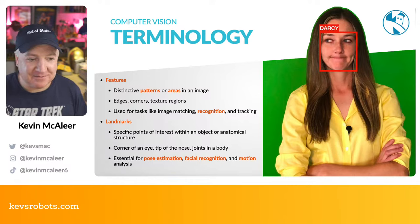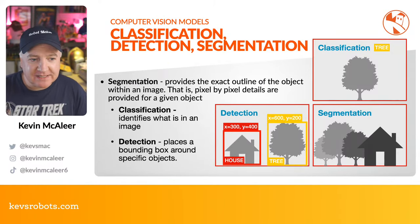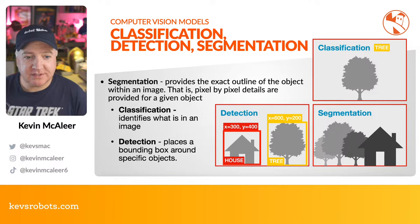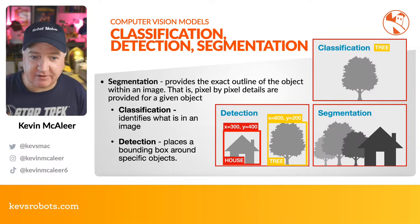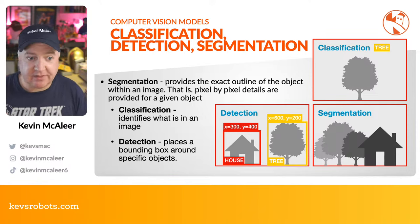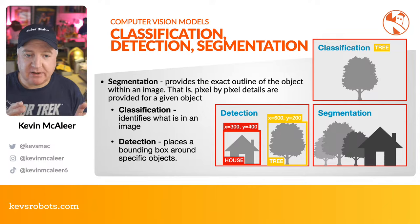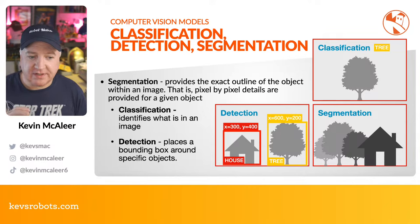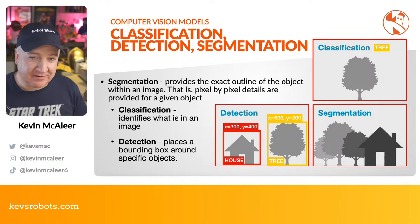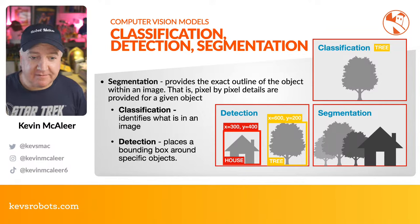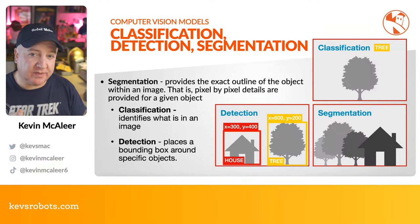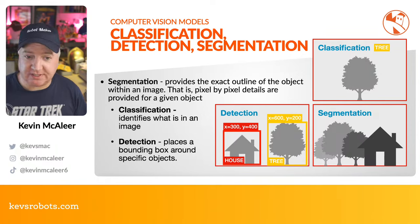Let's look at some computer vision models: classification, detection, and segmentation - three very different areas sometimes bundled together in an object detection library. Segmentation is about separating different things - like a house, a tree, or a background. Background removal in Microsoft Teams or Zoom uses segmentation to separate you from your background.